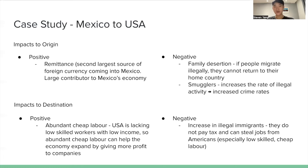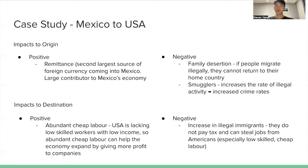The negative impact will be family desertion, because when people migrate illegally they can't return to their home country easily. Also, there are smugglers — paid individuals who support the illegal migration of Mexicans across the border — which increases the rate of crime. These smugglers are paid tens of thousands of dollars for this illegal act, but Mexicans who really want to move to the USA tend to choose this approach, which is not a legal one.